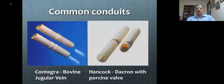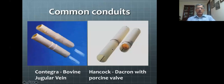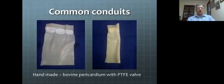Different companies sell different modifications of these conduits. The outer tube is Dacron — you can see the crimping of the Dacron, with multiple folds on the outer wall. These fine folds allow the tube to be bent without kinking, so as you bend the tube it retains its circular shape throughout. That is why it is known as a crimped graft.